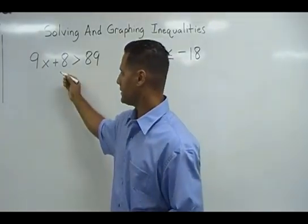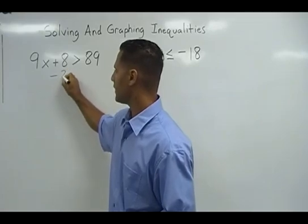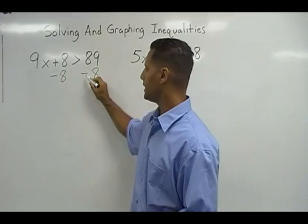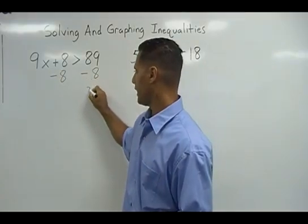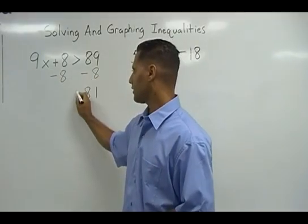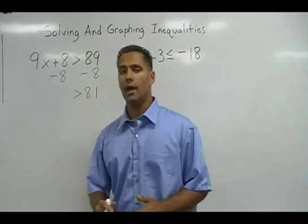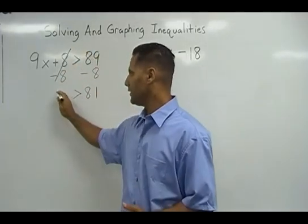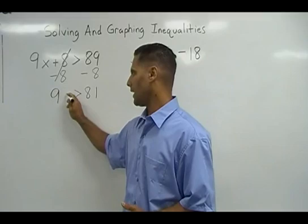So instead of adding 8, we're going to subtract 8 from the left side of our inequality and do the same thing on the right side of our inequality. 89 take away 8 leaves us with 81. And we drop down our inequality sign. Now this positive 8 and this negative 8 cancel out on this side, leaving us only with the term 9x.